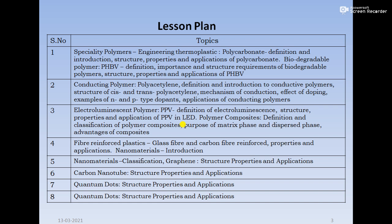We will also cover plastics. That is about polymers. In the nano materials section we will see its classification, then graphene, carbon nanotube, quantum dots, their structures, properties, and applications. This is the lesson plan to be covered in the next eight lectures. Starting with the polymer.